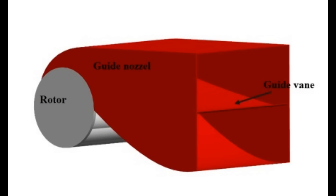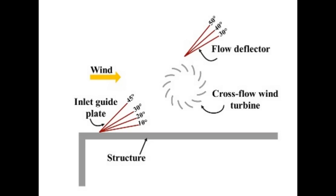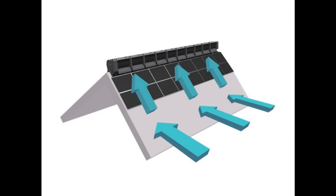Augmentation devices include things like guide nozzles, guide vanes, the casing itself, windshields, deflectors, and cowlings, and you see those in things like the PowerPod, for example. In terms of the ridge blade, you can see that the rooftop it's recommended to sit it on is acting as a very large deflector.